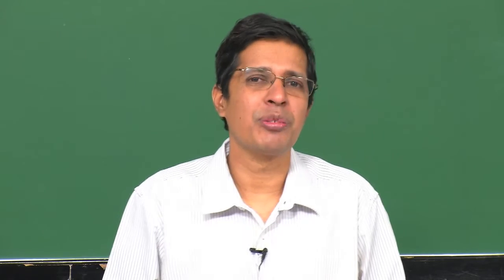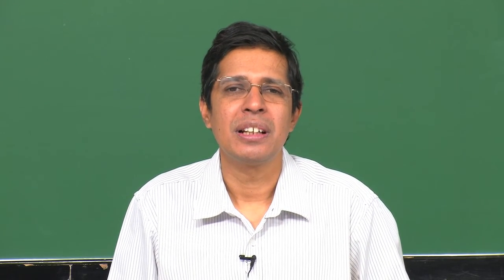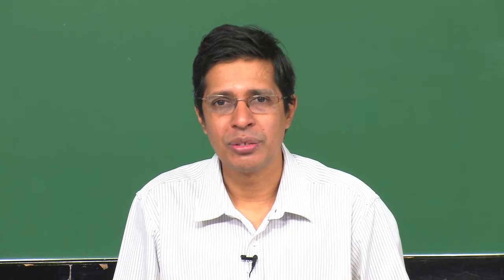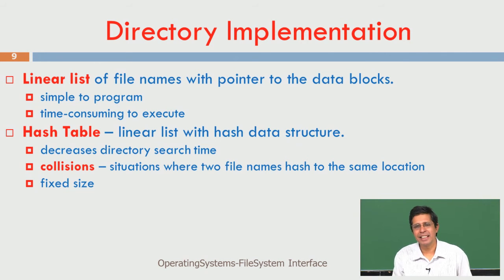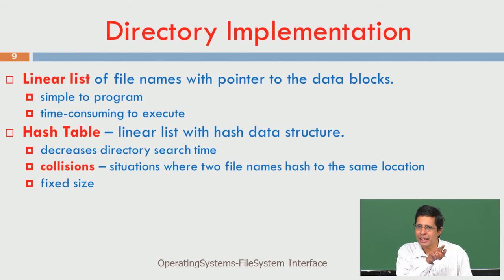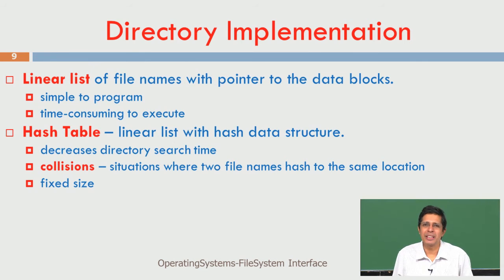Now let us look at directory implementation. A directory essentially consists of a list of files stored plus pointers to subdirectories. I can implement a directory as a linear list. When I want to open a file, the operating system goes to the directory and scans one by one. If there are 100 files and I want to access the 100th file, I have to scan from the top. So the time required to open a file becomes very large - these are very important and interesting things about directory implementation.